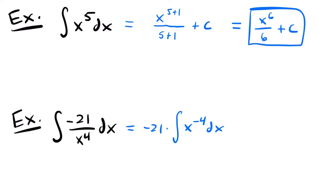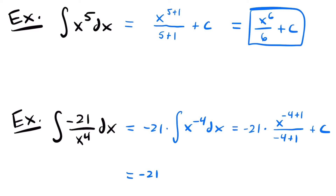Now we can use the power rule for this term inside our integral. This is equal to negative 21 times x to the negative fourth power plus 1 divided by negative 4 plus 1, and then we'll add c. If we simplify, this will be equal to negative 21 times x to the negative third power divided by negative 3 plus c. Negative 4 plus 1 is negative 3, and negative 4 plus 1 on the bottom is also negative 3.